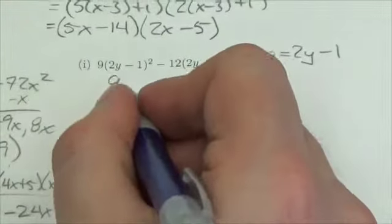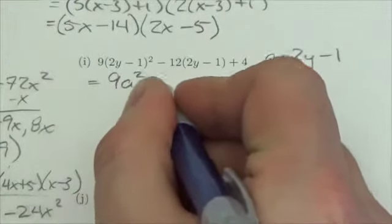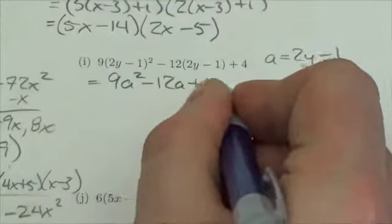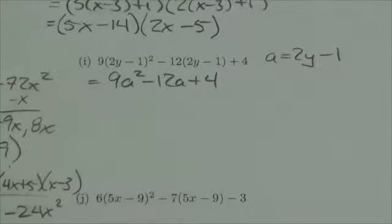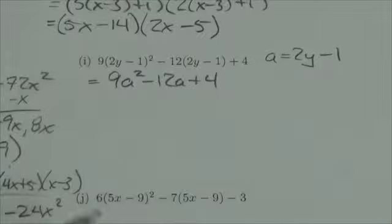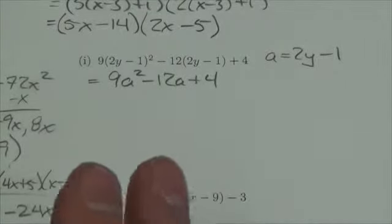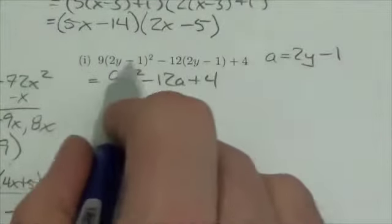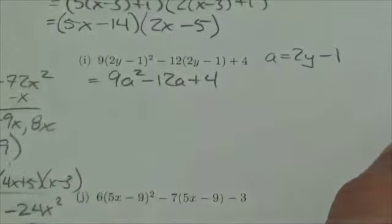So this first term is going to become 9a squared minus 12a plus 4. And I can work with that. I'll factor the quadratic part of this thing first, and then deal with the little linear binomial in there afterwards.